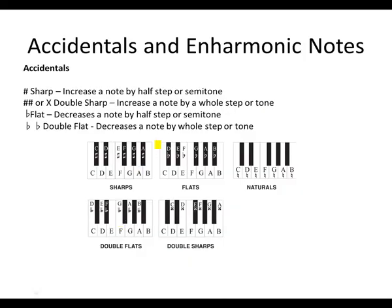Accidentals and enharmonic notes: we have learned about accidentals. We know that we have a sharp, which increases a note by a half step or a semitone. Now we introduce what we call a double sharp, which can be written or indicated by two sharp signs or an X. It increases a note by a whole step or a tone.